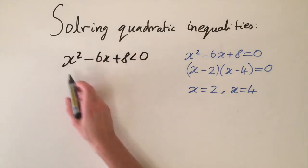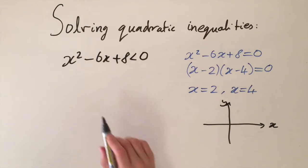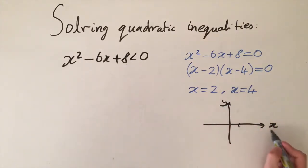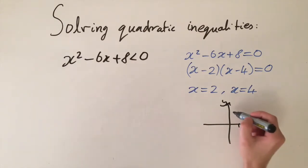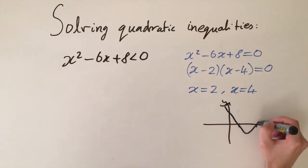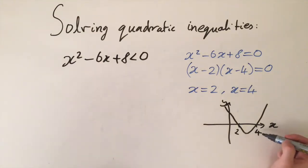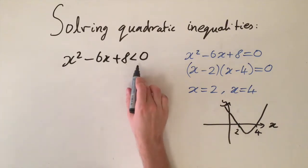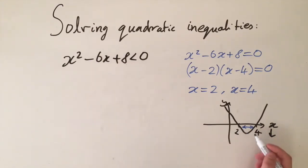Our next step is to sketch what this function looks like. We draw out the xy plane and sketch the quadratic function. We know it crosses the x-axis at x equals two and x equals four. Because the x squared coefficient is one — it's positive — we know the parabola is going to go upwards, tending towards positive infinity. Now the problem is asking: what values of x make this graph less than zero? We want to find when y is negative. From the graph, it corresponds to when x is in between two and four — these are the only values where y is negative.